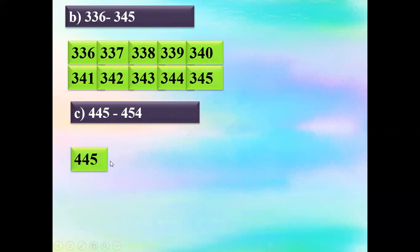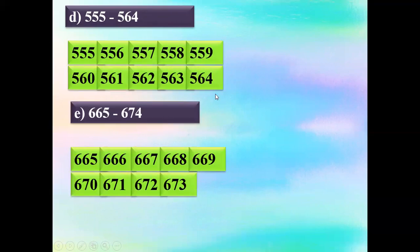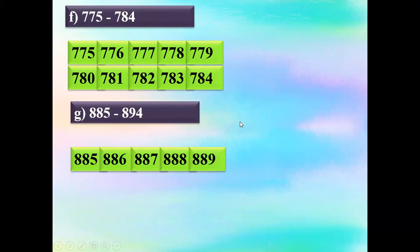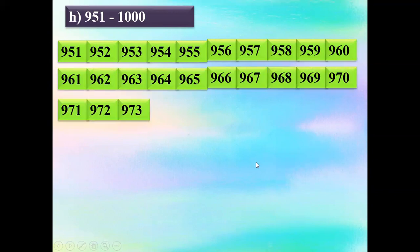The same way: four hundred and forty-five to four hundred and fifty-four. Fourth one is five hundred and fifty-five to five hundred and sixty-four. Fifth one is six hundred and sixty-five to six hundred and seventy-four. Seventh one is seven hundred and seventy-five to seven hundred and eighty-four. Then eight hundred and eighty-five to eight hundred and ninety-four. You just look at the number and continue writing until you reach the last number.